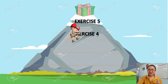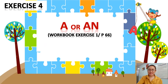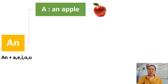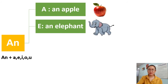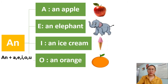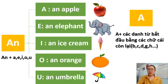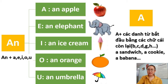Now try your best — let's do Exercise 4! Exercise 4 is Workbook Exercise 1 on page 66, about 'a' or 'an'. We use 'an' before nouns beginning with a, e, i, o, and u — for example: an apple, an elephant, an ice cream, an orange, an umbrella. We use 'a' with consonants — for example: a sandwich, a cookie, a banana. Can you remember?